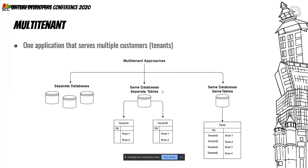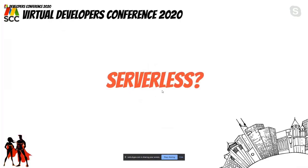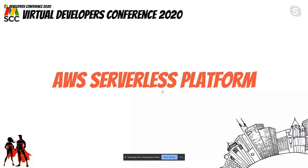Now we'll move to the serverless part. When we hear the word serverless, it means we do not have to think about servers. We can build our application by only focusing on the core part and not worrying about server maintenance, capacity provisioning, etc. For this session we'll be using the AWS serverless platform. I have been working with Amazon Web Services for the past three years and it provides a range of fully managed services that you can use to build and run serverless applications.